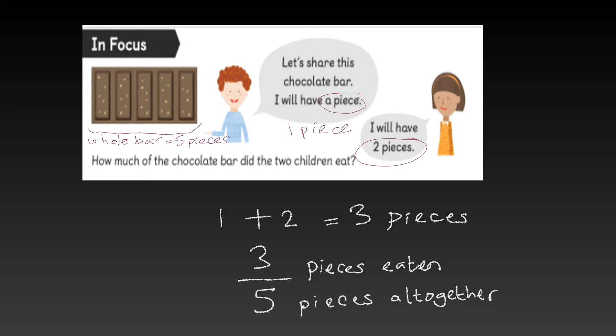The in-focus task shows a whole bar of chocolate. There's two children and the question is asking how much of the chocolate bar did the two children eat? Firstly, we can look at the whole chocolate bar. We can see there's five pieces altogether. The boy says, let's share this chocolate bar. I will have a piece. The girl states, I will have two pieces.